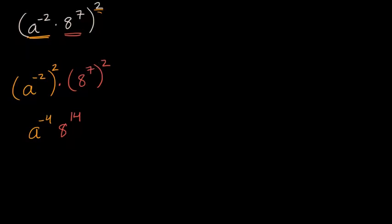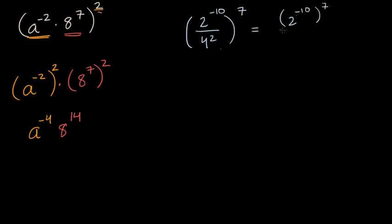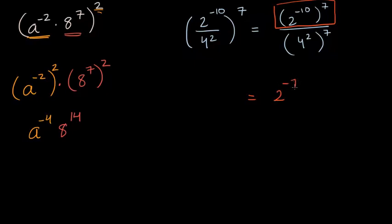Let's do one more example where we are dealing with quotients. So let's say we have two to the negative ten divided by four squared, and we're going to raise all of that to the seventh power. Well this is equivalent to two to the negative ten raised to the seventh power, over four squared raised to the seventh power. If you have a quotient raised to some power, that's the numerator raised to that power divided by the denominator raised to that power. So the numerator would be two to the negative ten times seven, which is two to the negative 70th power.